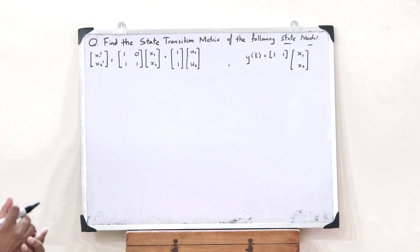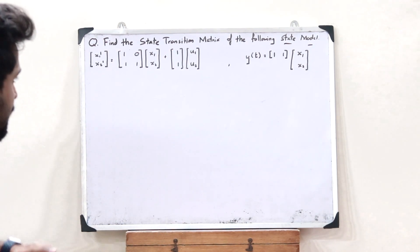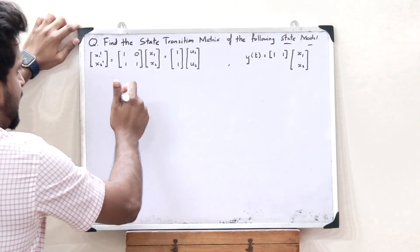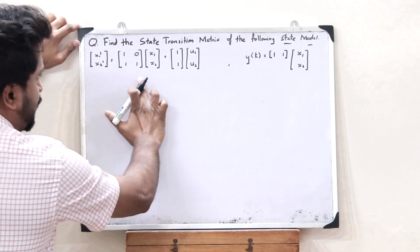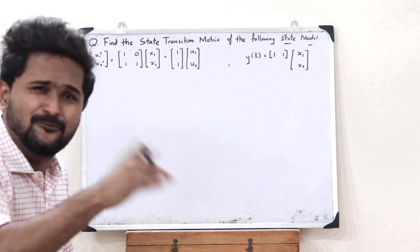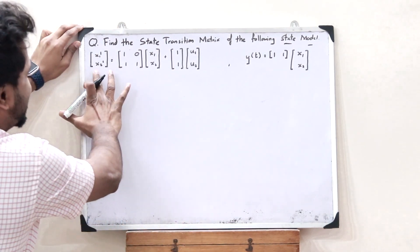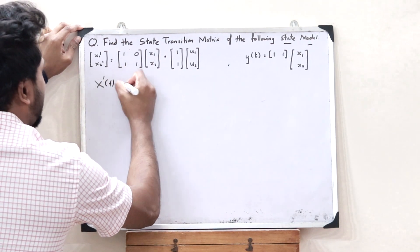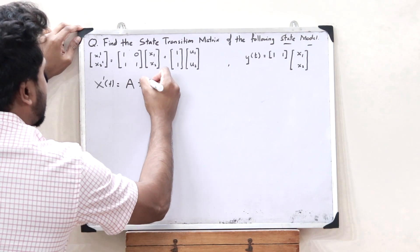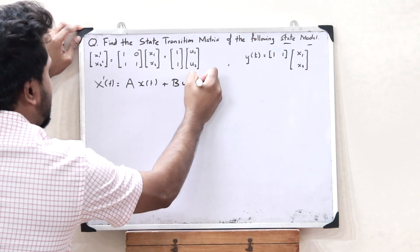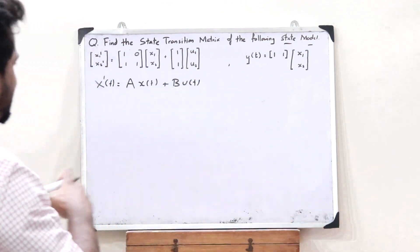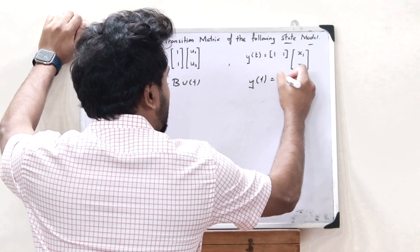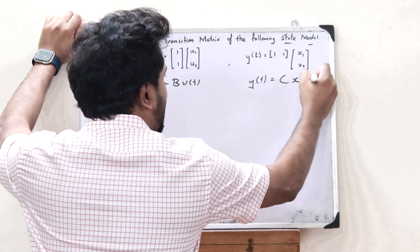Here we are given a particular state model. When we observe this carefully, what we observe is that this particular equation might look a bit complex but it is actually very simple. This is just the state equation of the form x'(t) = A·x(t) + B·u(t). This is the output equation given by y(t) = C·x(t).